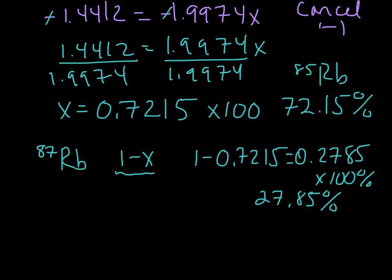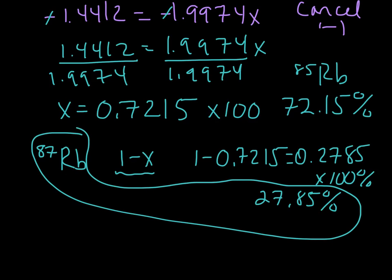So in the end, fractional abundance of 87 rubidium is 27.85%, and 85 rubidium, that isotope is 72.15% abundant.